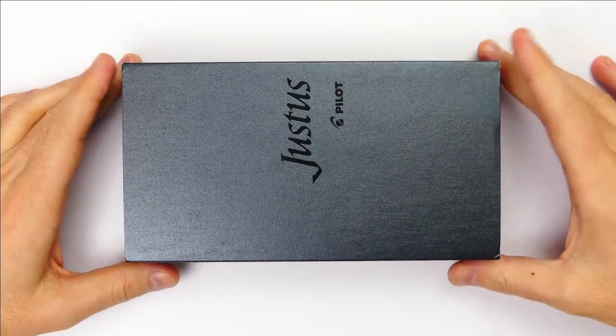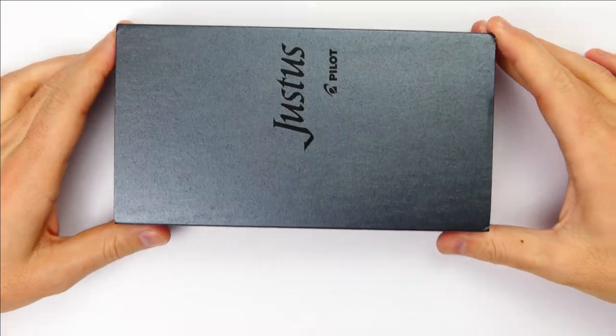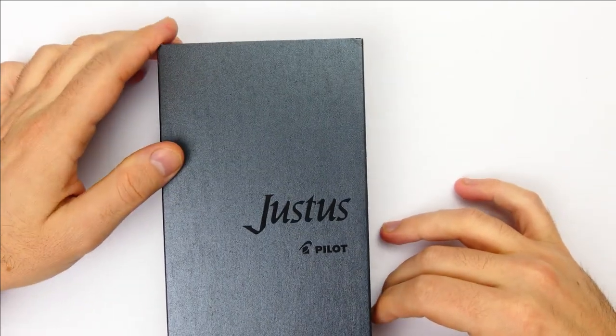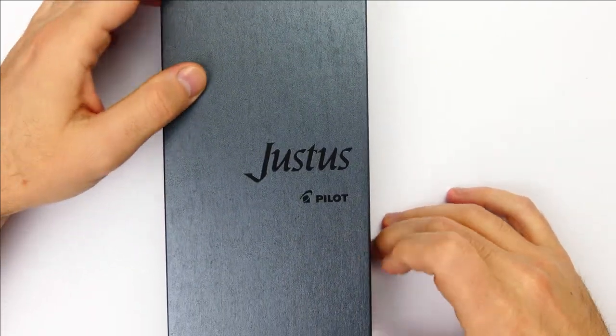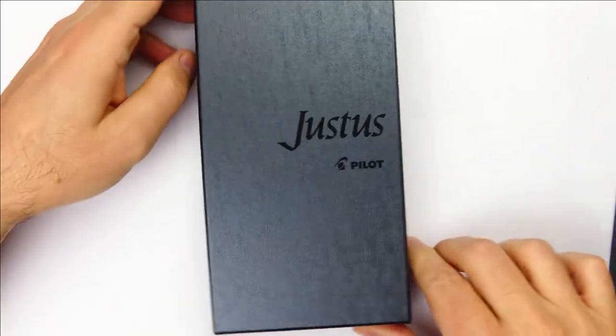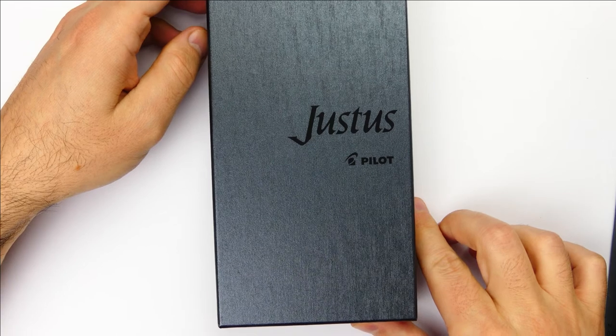The pen comes in this unique box, at least by Pilot standard. This box is made only for the Justice 95. You can see the logo and the name on the sleeves and when you take them off, there is the same look and text on the box as well.